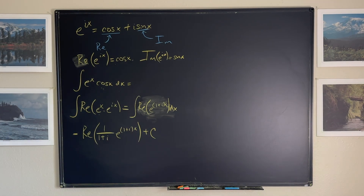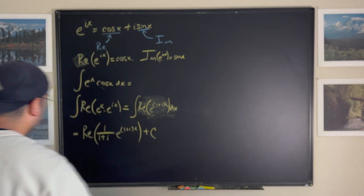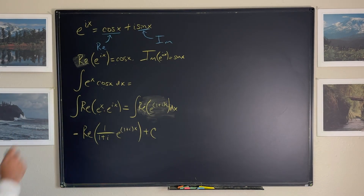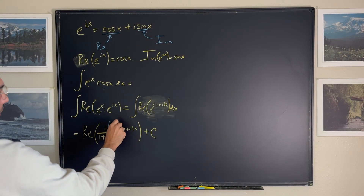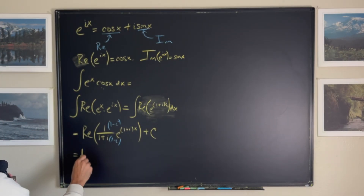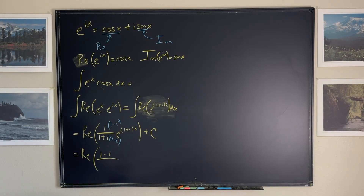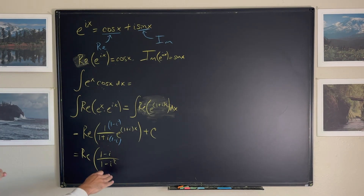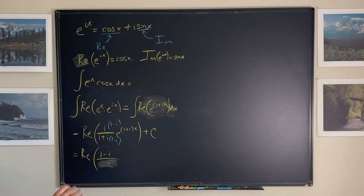Now how do we simplify 1 over (1+i)? From algebra, we multiply the top and bottom by the conjugate. Multiplying top by (1−i) and bottom by (1−i), the bottom becomes 1 minus i squared. Since i squared is negative 1, we have 1 minus (−1) = 2. So 1 over (1+i) simplifies to (1−i) over 2.